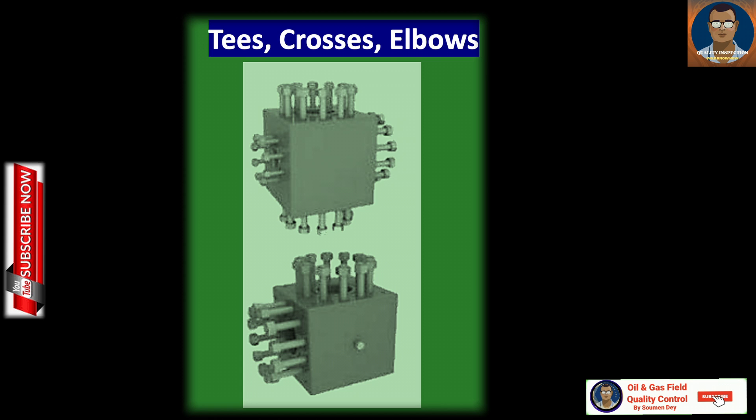Some mandatory fittings and accessories in the context of wellheads and christmas trees include tees, crosses and elbows. A cross is a pressure-containing fitting with a minimum of four openings in a plane. A tee is a pressure-containing fitting with three openings in a plane, whereas an elbow is a pressure-containing fitting with two openings. These are provided in sizes from 2-1/16 inch to 7-1/16 inch with working pressure ranges from 2,000 PSI to 15,000 PSI.